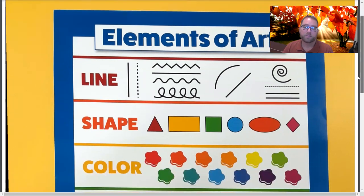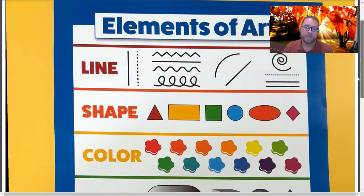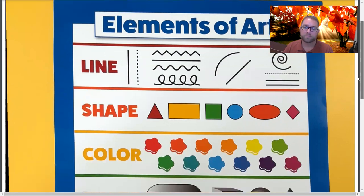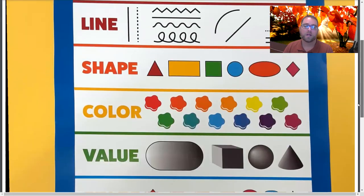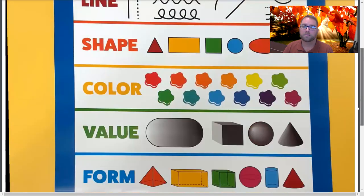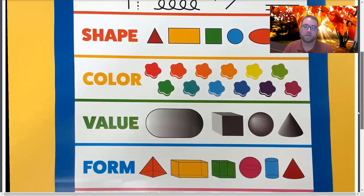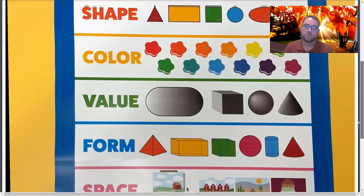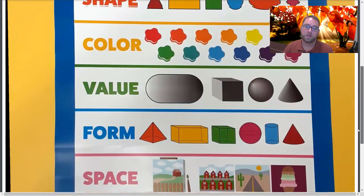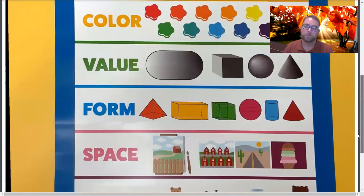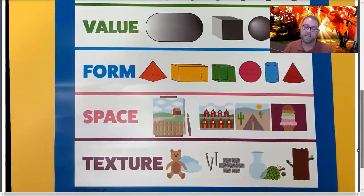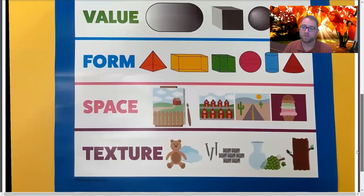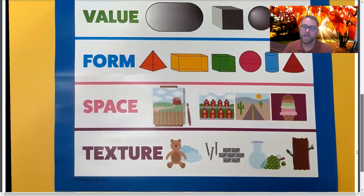The elements of art are line, shape, color, value, form, space, and texture.